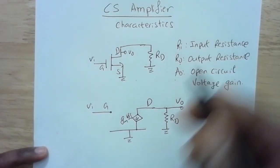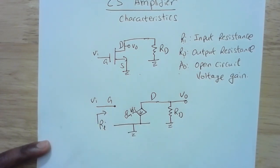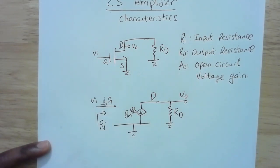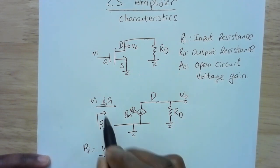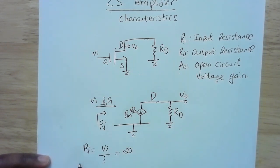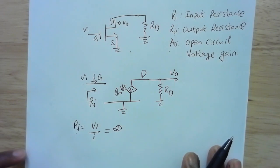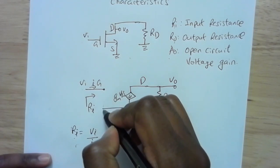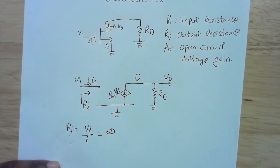Let's first consider the input impedance Ri — that is, the impedance looking in at the input. If we apply a voltage Vi and measure the current going in, then Ri equals Vi over I. Since the current going into the gate is zero, Ri will be infinite, which is what we want for a good amplifier. In general, if you have a biasing circuit there may be a resistance present, in which case that resistance would be your input impedance — but we'll get to biasing circuits later.